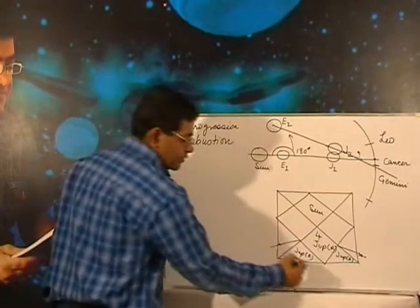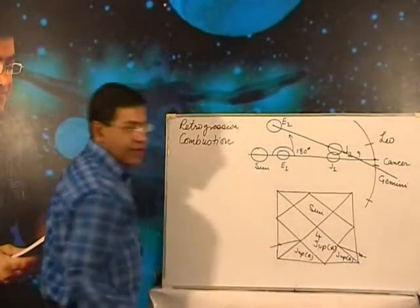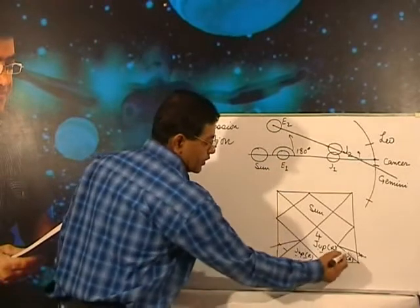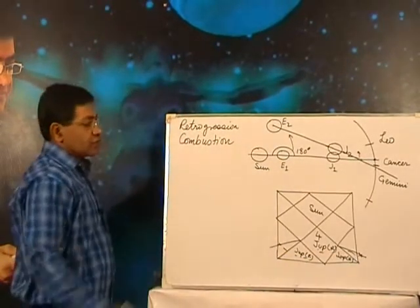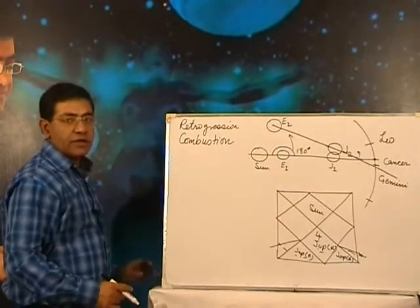These are the places when the exterior planets remain retrograde here, here, here, and here. This is the diagrammatic representation.